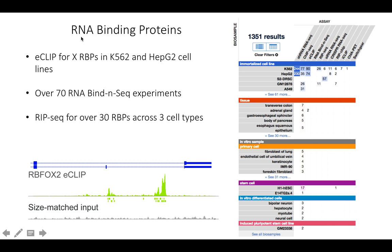Grant Gravely's project worked on RNA binding proteins using a multi-pronged approach. They performed eCLIP for a large number of RNA binding proteins in two cell lines — K562, a red blood cell-derived line, and HepG2, a hepatocyte cell line. They also performed 70 RNA bind-and-seq in vitro experiments to determine the binding specificities of each RBP, and RIP-seq for over 30 RBPs across three cell types. A genome browser shot shows eCLIP data for the RBP RBFox2 with signal well above input.